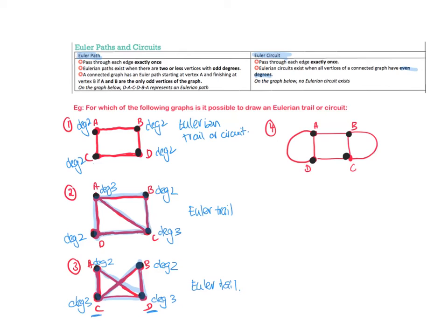So last one, the degree of A here is equal to 3, the degree of B is 3, degree of this one's 3, and this is also 3. So this one can have neither a Euler trail or circuit.